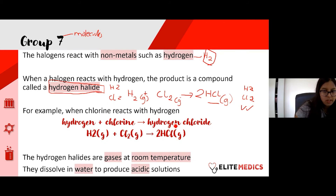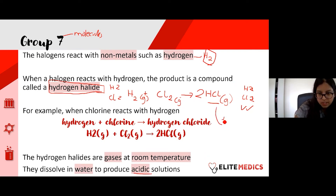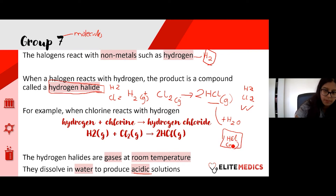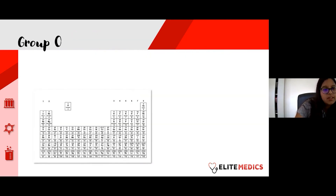HCl is an acid, but at room temperature both hydrogen and chlorine are gases, producing HCl gas. If you dissolve that gas in water, you get an aqueous acid — so HCl(g) + H₂O gives HCl(aq), which is an acid.